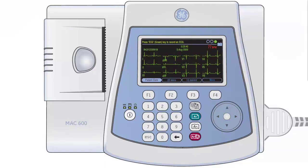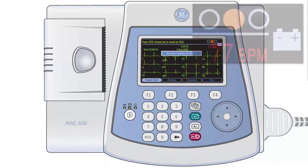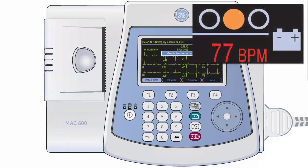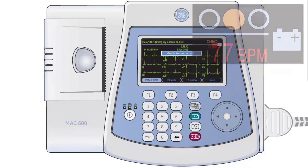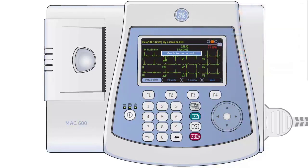An orange indicator means that there is poor connection to the patient, which is likely to cause some interference on the ECG. You should check the leads indicated and confirm the electrodes have not slipped out of position and that the patient is relaxed.